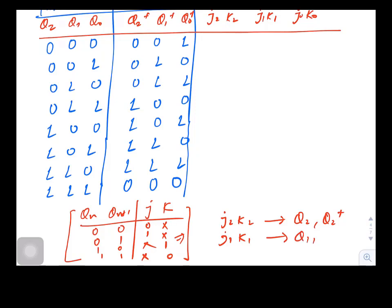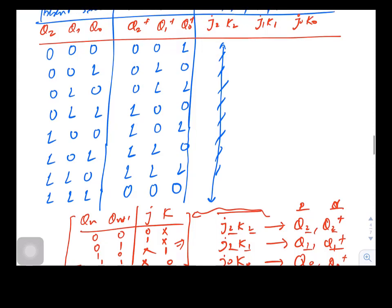If we are looking for J1 K1 values, we have to see Q1 and Q1+. And if you are looking for J0 K0, you have to see Q0 and Q0+ as per this table. This column is the present state, this column is the next state, and these are your flip-flop inputs. If it is 2, it is 2 everywhere; if it is 1, it is 1 everywhere; if it is 0, it is 0 everywhere.